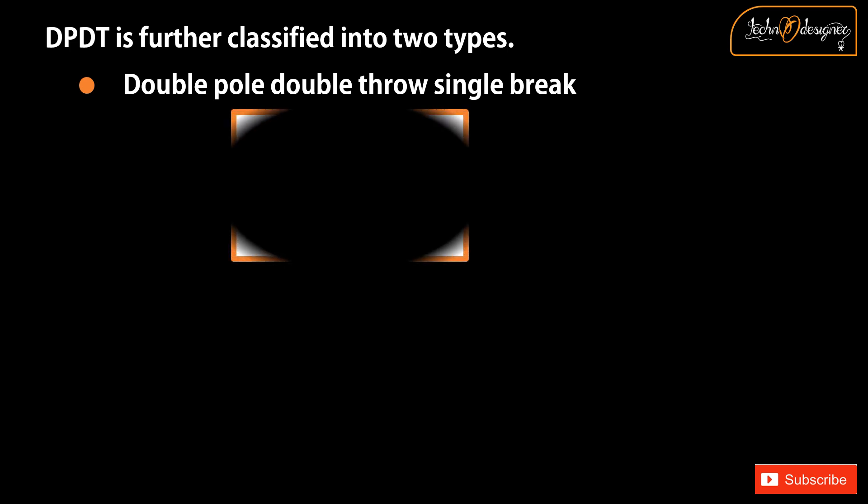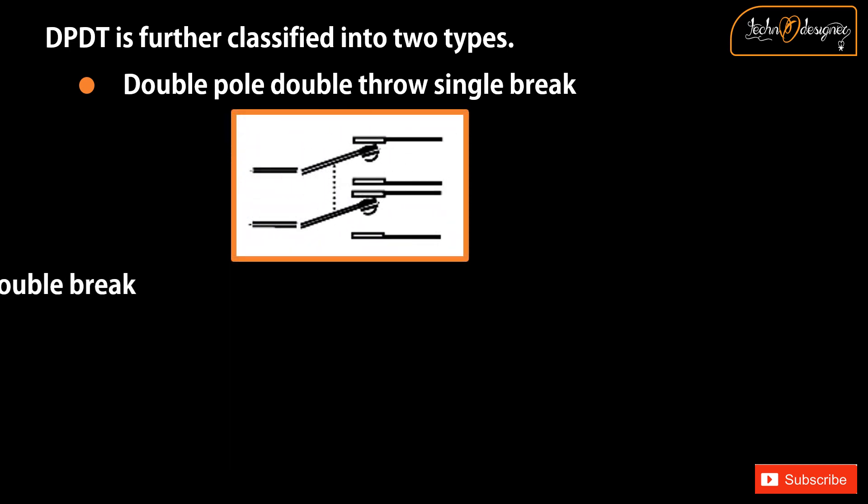DPDT is further classified into two types: Double pole double throw single break, and Double pole double throw double break.